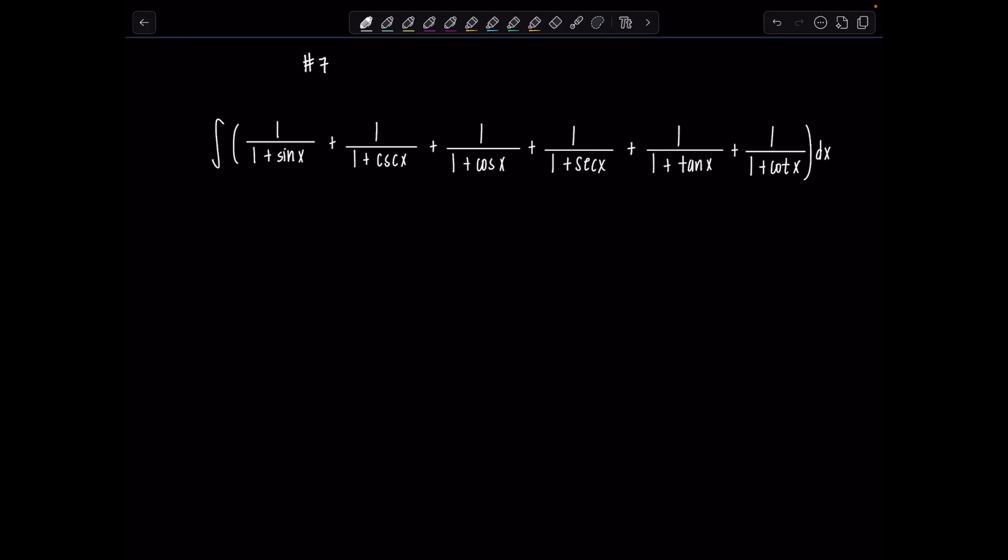So observe if y is an algebraic expression, then we can make the following statement, and I want you to observe something about the terms in the integrand. Sine of x and cosecant x, those are reciprocal functions, right? Cosecant x is 1 over sine x. So essentially what we're doing is we're adding 1 over 1 plus a trig function plus 1 over 1 plus the reciprocal of that trig function, and we're doing that three times.